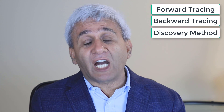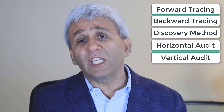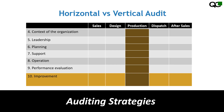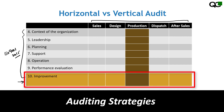We've now covered three strategies: forward tracing, backward tracing, and the discovery method. The other two strategies are horizontal versus vertical audit. Here you need to decide which type to use. Using a table with ISO 9001:2015 top-level requirements and departments — sales, design, production, dispatch, and after sales — one way to audit is to look at one specific component of the standard, such as improvement, and check it across all departments. This is a horizontal audit.